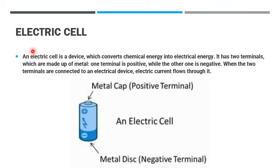What is the electric cell? An electric cell is a device which converts chemical energy into electric energy. It has two terminals which are made up of metal. One terminal is positive while the other one is negative.